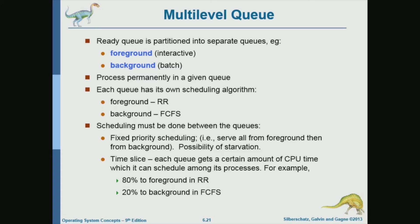Why is first come first serve a good choice for background processes? Because it's not time critical and it's not interacting with the user, so if a process takes a long time or waits for a long time that should not be a big problem. The order in which things get done isn't as big an emphasis as it is in the foreground.